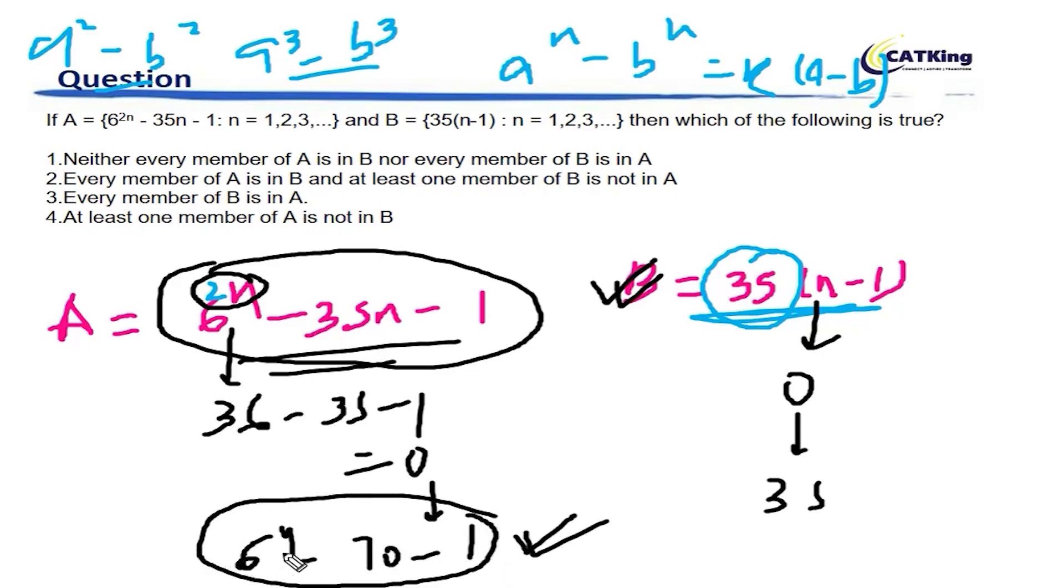So this number - 6 squared is 36, 36 squared is 1296, 1296 minus 70 is 1226, minus 1 is 1225. So if you actually see, this number is 35 square. This is 35 square and this is 35. So basically all the numbers in A also are multiples of 35, but the gap between two numbers is huge. What does this mean?